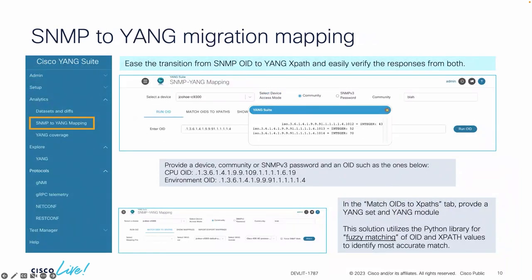Next, we have our SNMP OID to Yang model mapping. How many people use SNMP today? I see quite a few of us do.